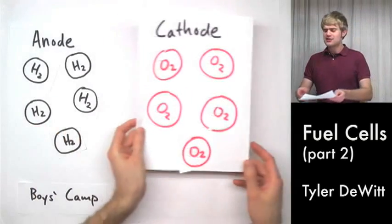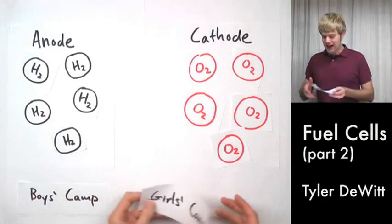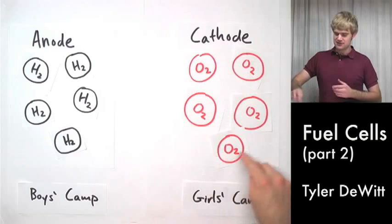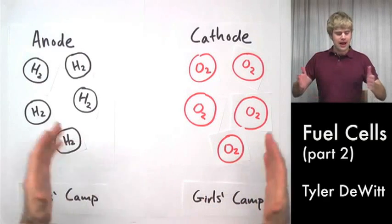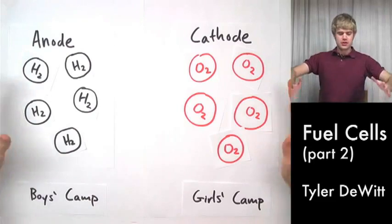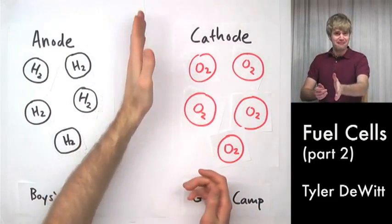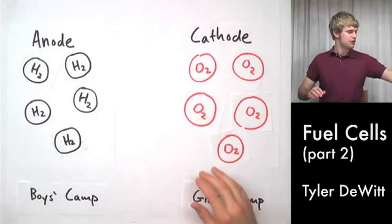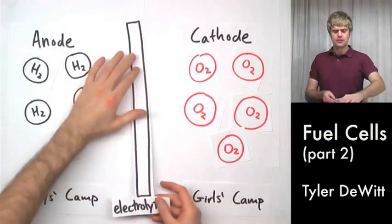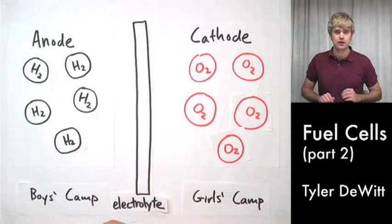Now on the other side of the fuel cell is the girls camp. It's the cathode where the oxygen gas, these representing molecules of oxygen gas, where they live. Now, all these guys want to do is come together and start hooking up. Just like in camp there would be a forest or a fence between the boys camp and girls camp, in a fuel cell there's a barrier that prevents these guys from combining and it's called the electrolyte.